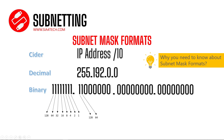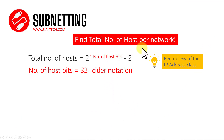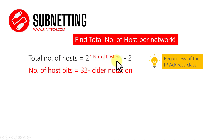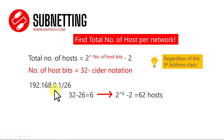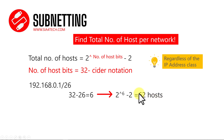If you have a subnet mask in decimal format, you must convert it to binary to find the CIDR notation. To find the total number of hosts per network, use this general formula for any IP address class: total hosts = 2 to the power of (number of host bits) minus 2, where host bits = 32 minus the CIDR. For example, 192.168.x.x /26: 32 minus 26 equals 6, so 2 to the power of 6 minus 2 equals 62 hosts.